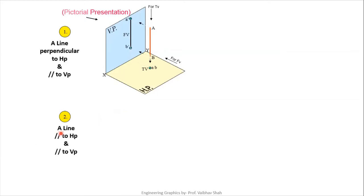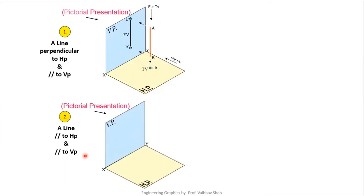Case 2: a line parallel to both HP and VP. In our pictorial representation, we take one line that is parallel to both HP and VP. Taking the front view, we get a line with points A' and B'. Taking the top view, we get a line on the horizontal plane.